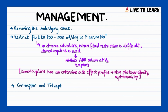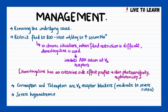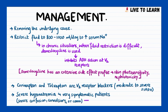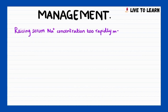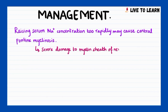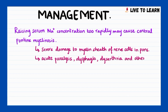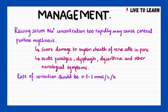Conivaptan and Tolvaptan are V2 receptor blockers used in moderate to severe SIADH. In severe hyponatremia and very symptomatic patients, such as those with severe confusion, convulsions, or coma, 3% intravenous hypertonic saline is advised at about 1–2 mL per kg given over 3–4 hours. It is important to note that raising serum sodium concentration too rapidly may cause central pontine myelinosis, which involves severe damage to the myelin sheath of nerve cells in the pons, leading to acute paralysis, dysphagia, dysarthria, and other neurological symptoms. Therefore, the rate of correction should be 0.5–1 mmol per litre per hour for serum sodium.